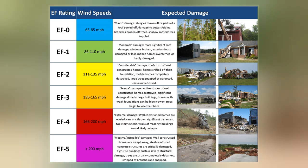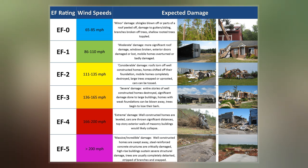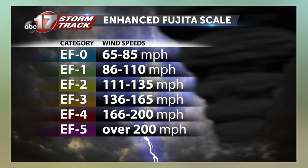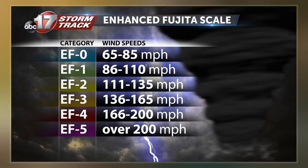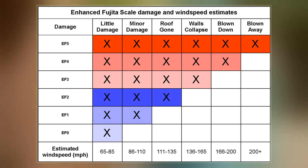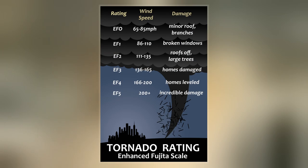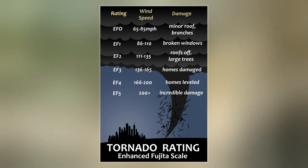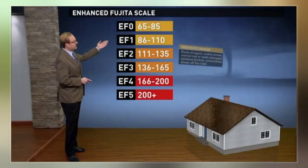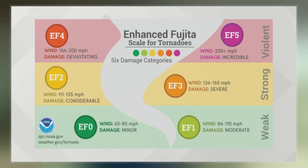It has also been proposed for use in France. The scale has the same basic design as the original Fujita Scale, six intensity categories from zero to five, representing increasing degrees of damage. It was revised to reflect better examinations of tornado damage surveys, in order to align wind speeds more closely with associated storm damage. Better standardizing and elucidating what was previously subjective and ambiguous, it also adds more types of structures and vegetation, expands degrees of damage, and better accounts for variables such as differences in construction quality.